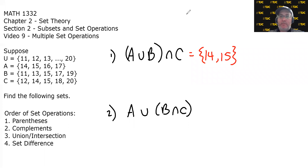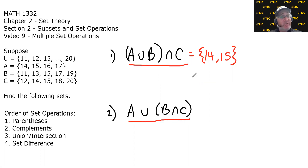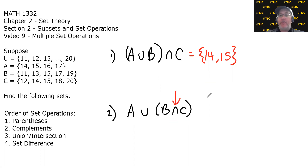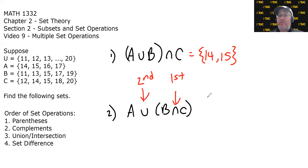For the next one, we have A∪(B∩C). This is the exact same order as before, but the only difference is the placement of the parentheses. So will it matter? Let's find out. First, we have parentheses — go inside and find one operation, intersection, which happens first. Once that intersection is done, we look outside: the only other operation is union, which happens second.